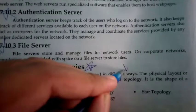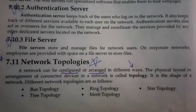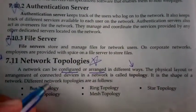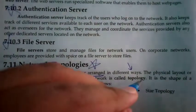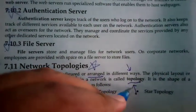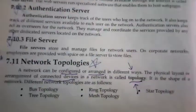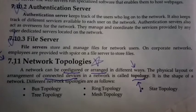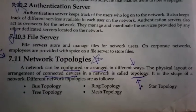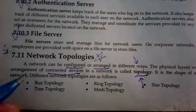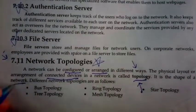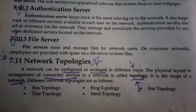different ways. The physical layout or arrangement of connected devices in a network is called topology. The arrangement, how they are connected together, this is topology. It is the shape of a network. Different network topologies